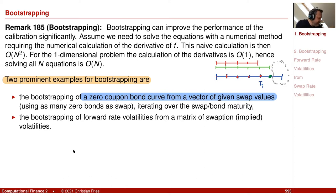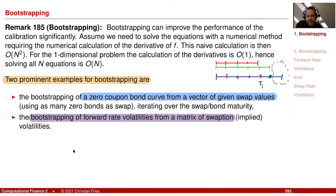Another example is the one on the slide: bootstrapping of forward rate volatilities from a matrix of swaption volatilities — see the previous session. These are of this type.